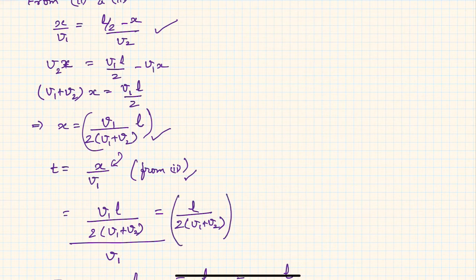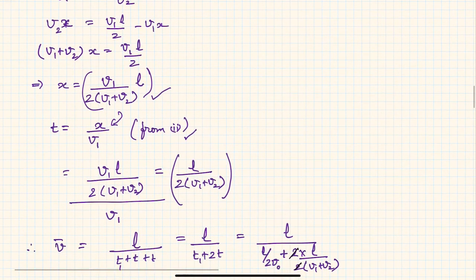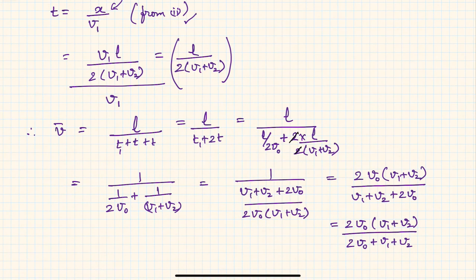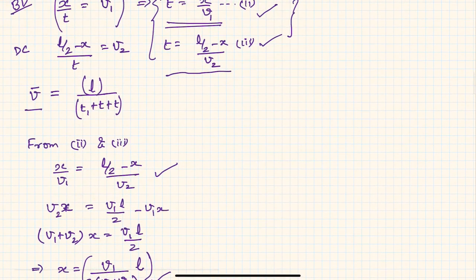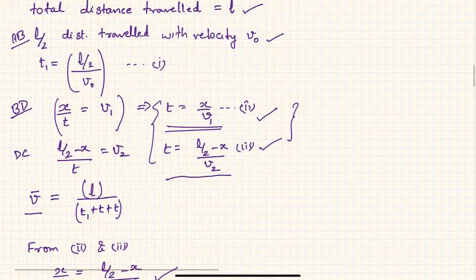you will get t equals l upon 2 times (v1 + v2). Now mean velocity is simple: mean velocity is nothing but total distance l divided by total time. So l upon (t1 + 2t).